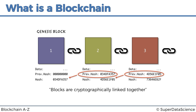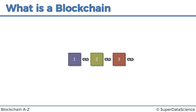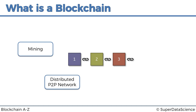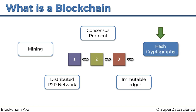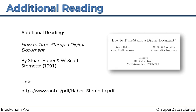That is a blockchain at a very high level to get us started. There are many more concepts to blockchains — things like mining, distributed peer-to-peer network, consensus protocol, immutable ledger, and hash cryptography. Many of these might sound confusing at the moment, and that's totally fine because we're going to go through them one by one in the coming tutorials. We're going to start in the next tutorial with hash cryptography. If you'd like to learn more from the original source, I highly recommend checking out the paper 'How to Timestamp a Digital Document' by Haber and Stornetta — the link is in the course notes. On that note, enjoy blockchains!